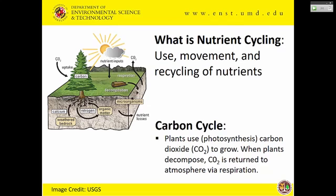When we talk about nutrient cycling, it's really the use, movement, and recycling of those nutrients in different places. This all begins with the carbon cycle, which is integral to how nutrients recycle and transform in the system. Plants use carbon dioxide in the process called photosynthesis to grow. As plants and organic materials decompose, they put carbon dioxide back into the atmosphere via respiration. In the process of plants growing, they need nutrients — that's where nutrient cycling becomes key to a productive agriculture system.